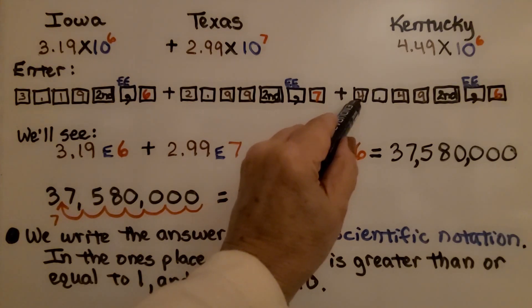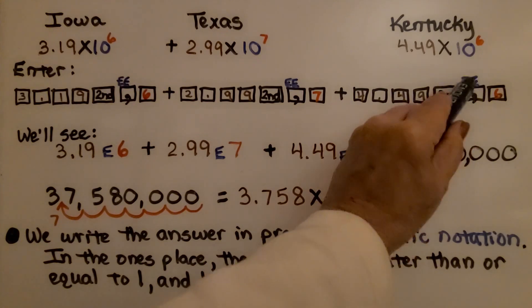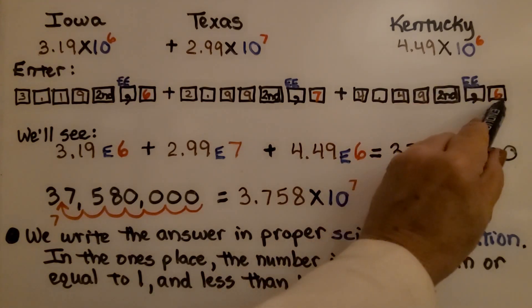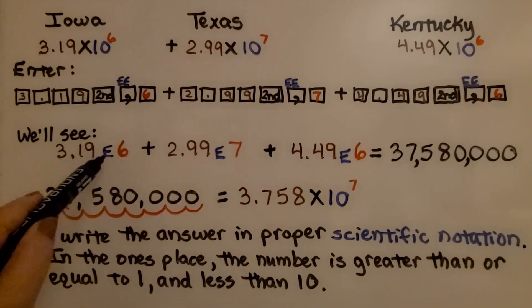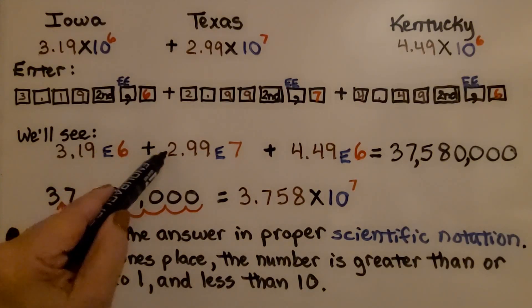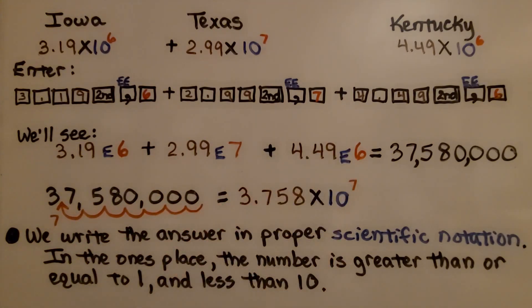Then enter Kentucky. 4.49, hit the second key, hit the comma with the EE above it, and then 6. We'll see 3.19E6 plus 2.99E7 plus 4.49E6, which is equal to 37,580,000.